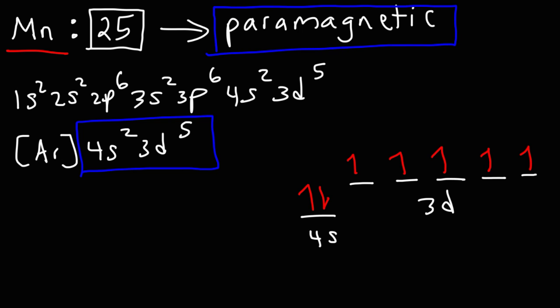So that's it for this video. Now you know how to determine if a substance is paramagnetic or diamagnetic. An element is paramagnetic if it has unpaired electrons, and diamagnetic if it has only paired electrons.